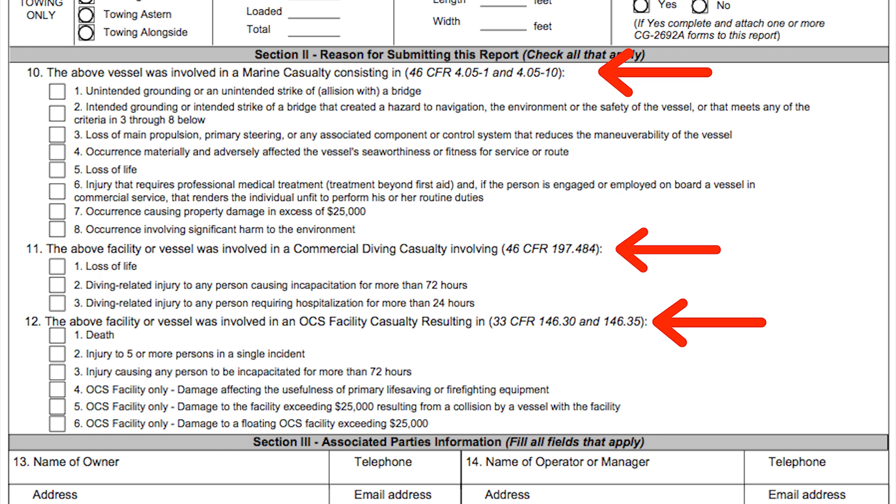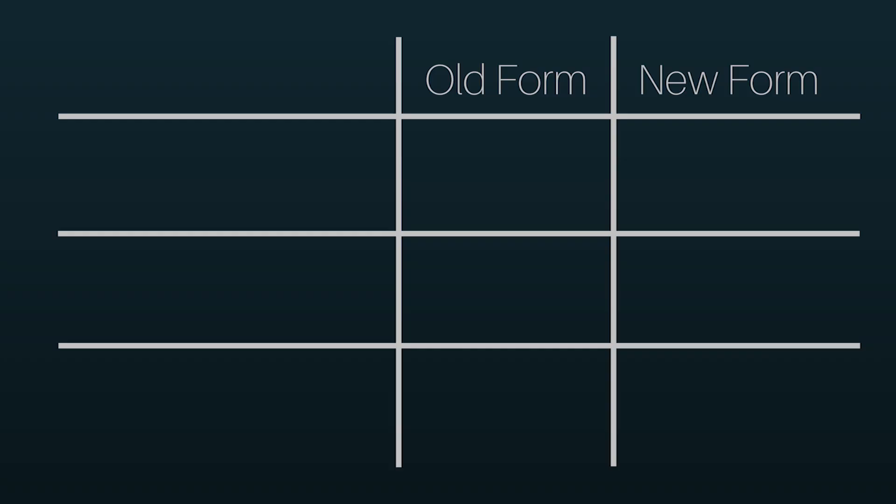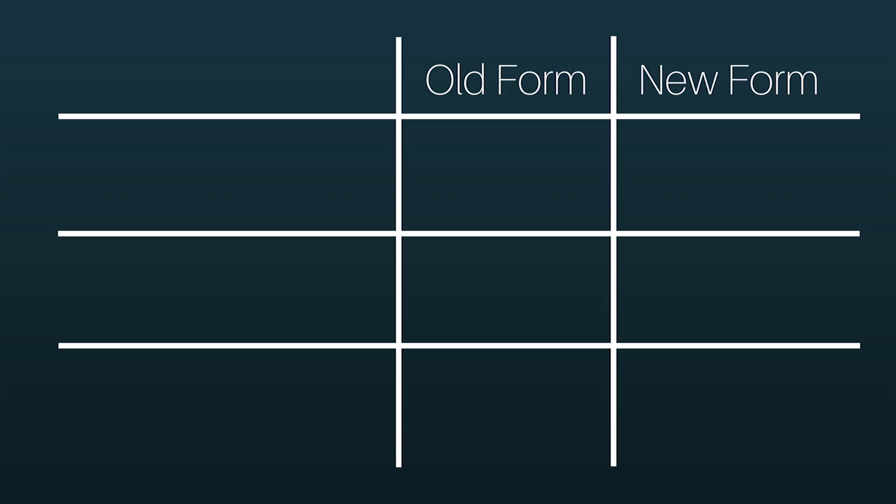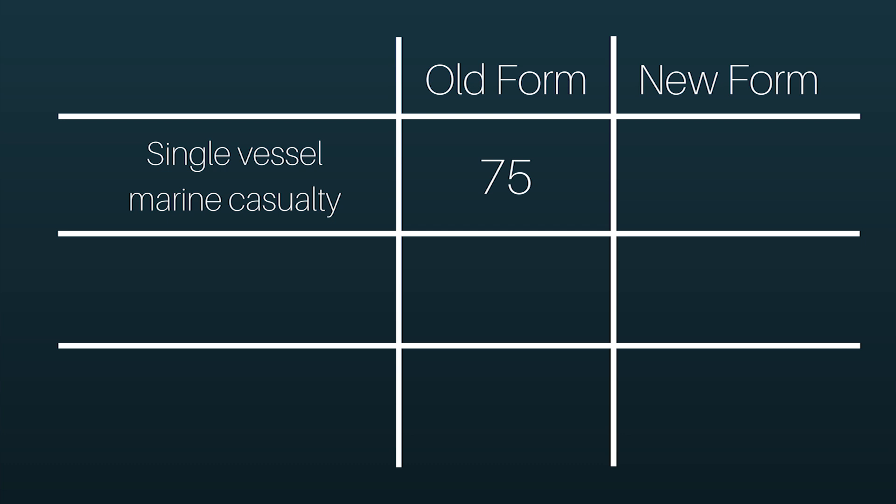Lastly, notice that information requested on the forms is primarily restricted to that required by regulation, removing superfluous data fields. This form reduces the burden upon those reporting casualties by decreasing the overall number of fields required to be entered. For example, for a single-vessel marine casualty, the old form required 75 data items, while the revised form only requires 40.